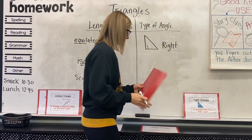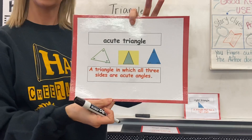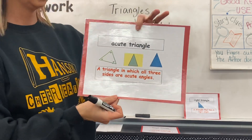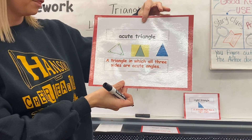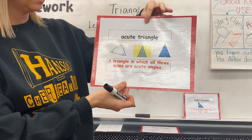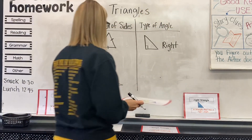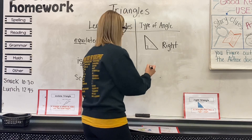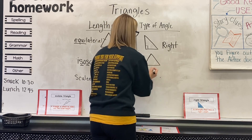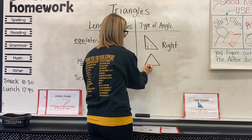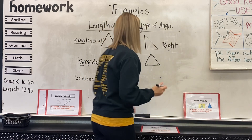The next one is an acute triangle — just like an acute little angle. It's a triangle in which all three angles are acute angles. It looks very similar to an equilateral triangle, and all of the angles make acute angles.